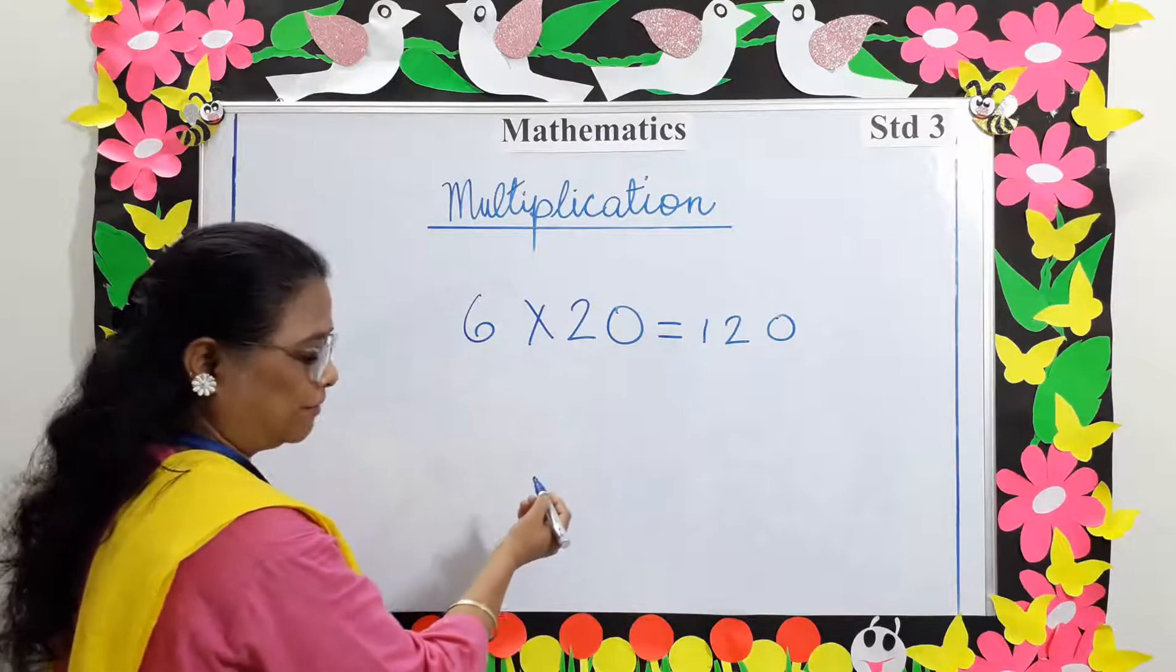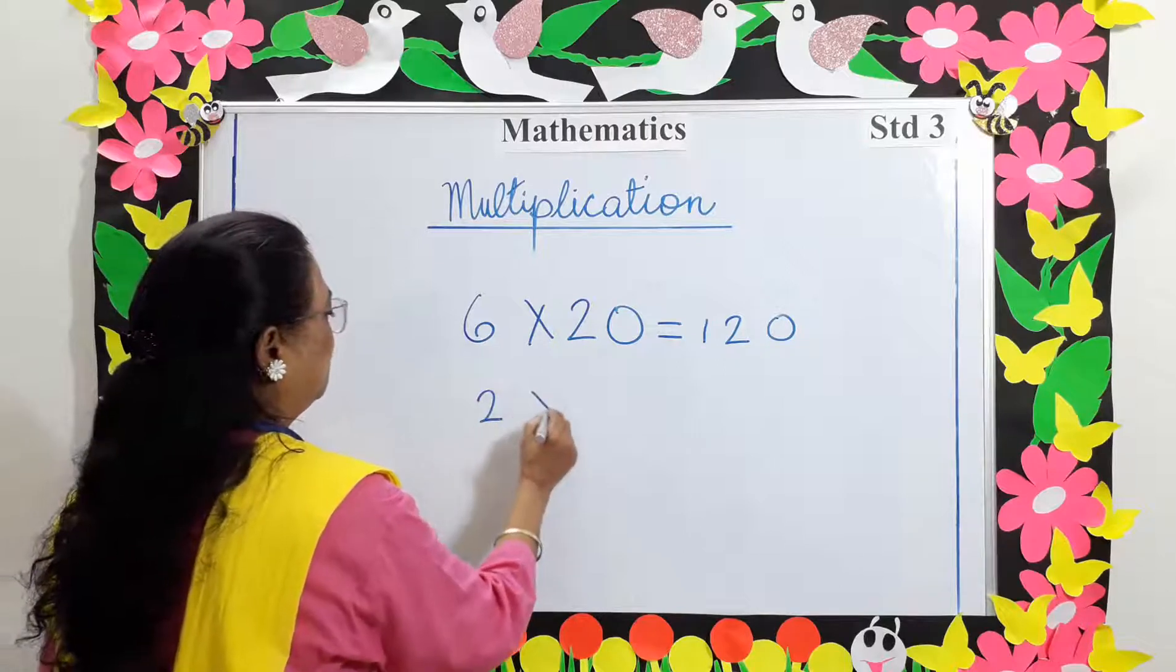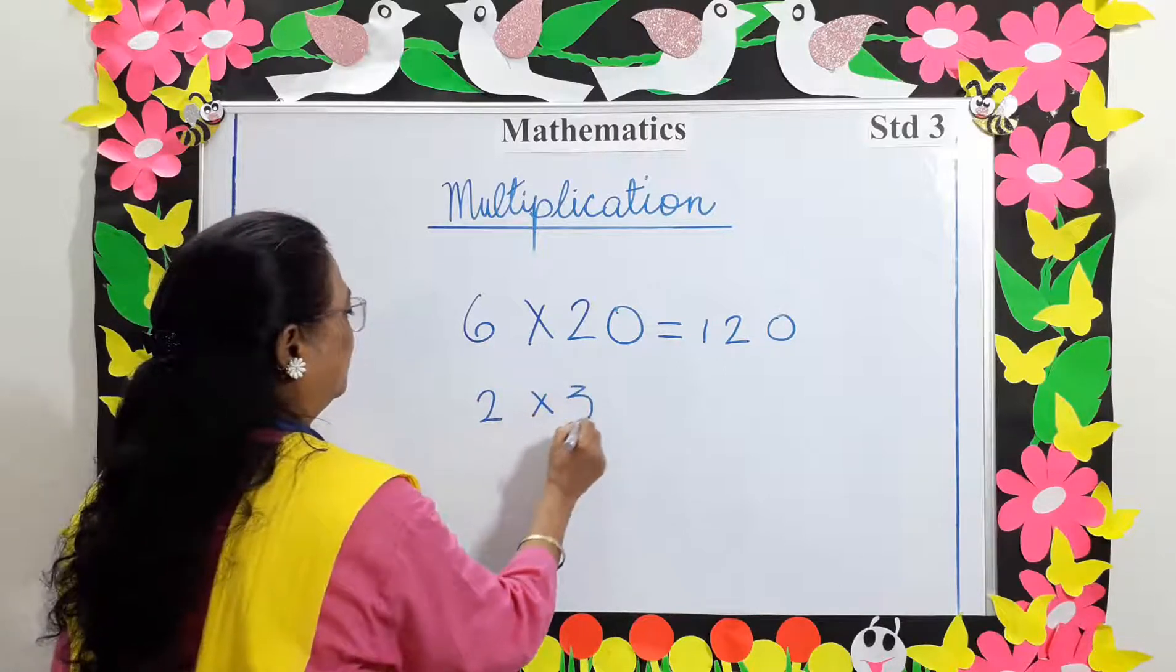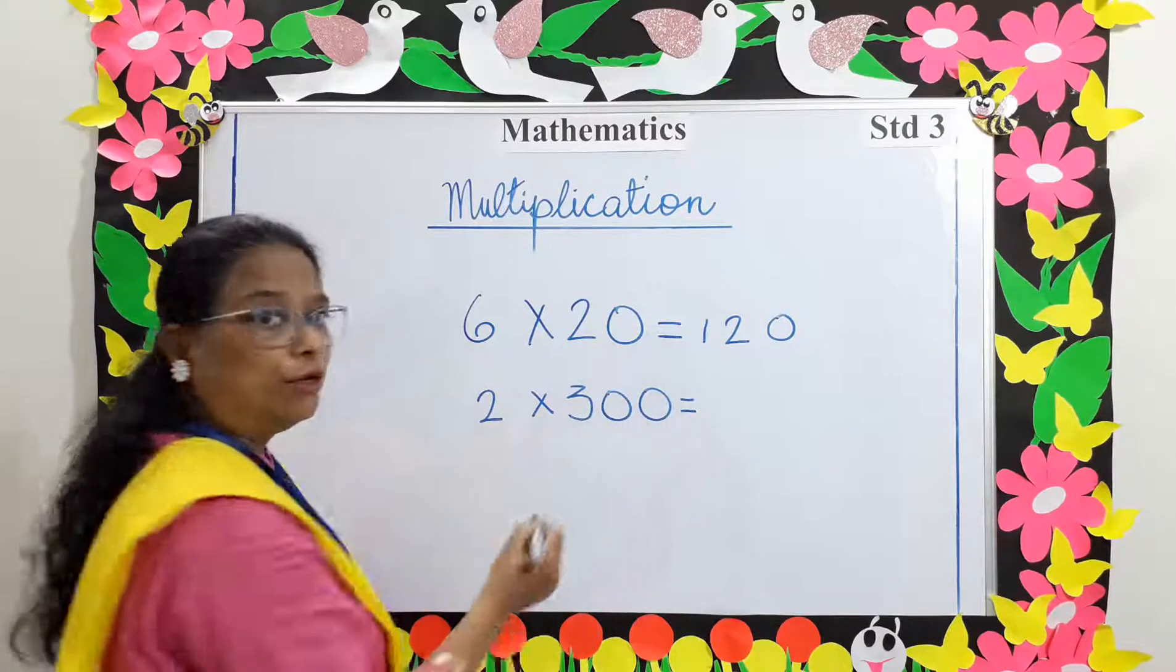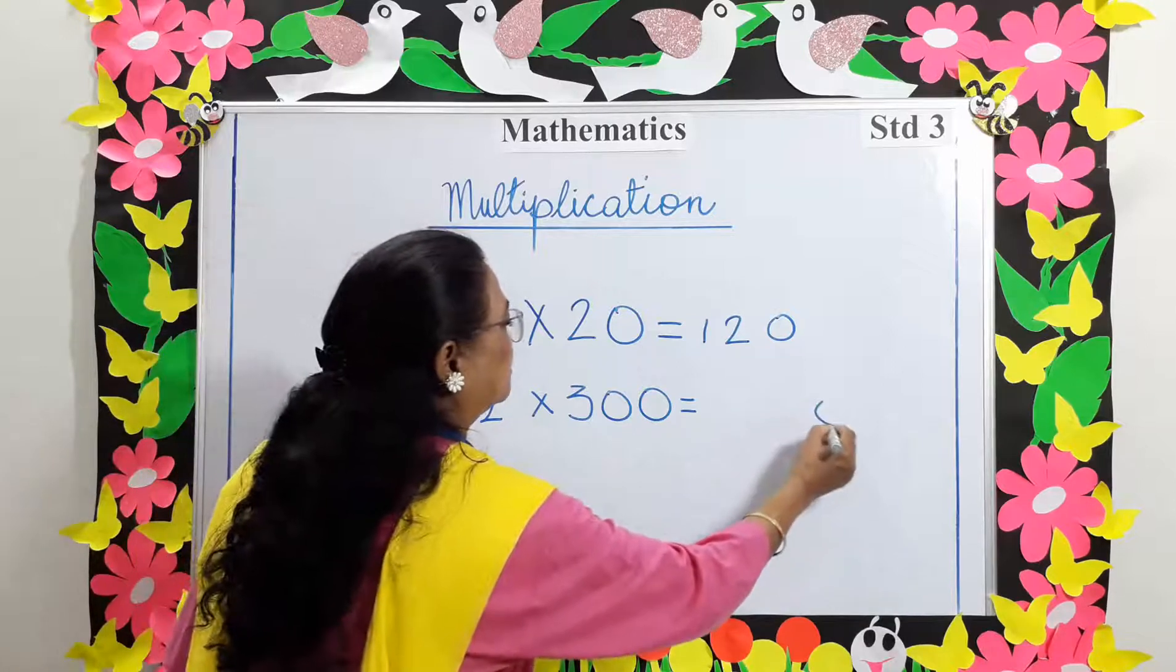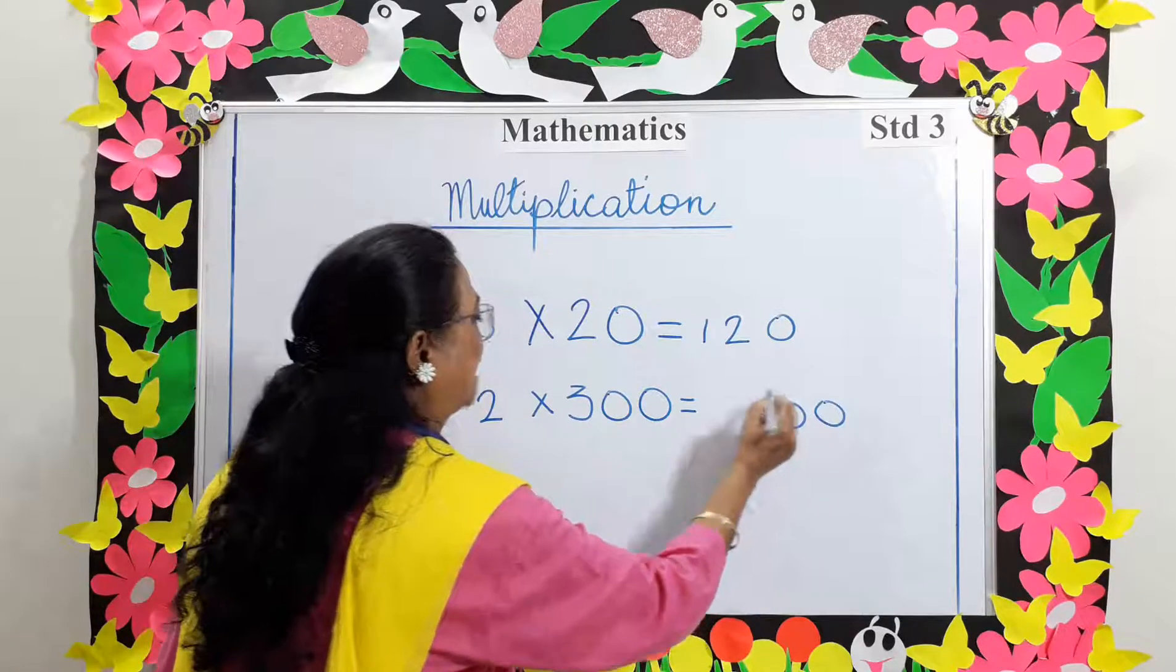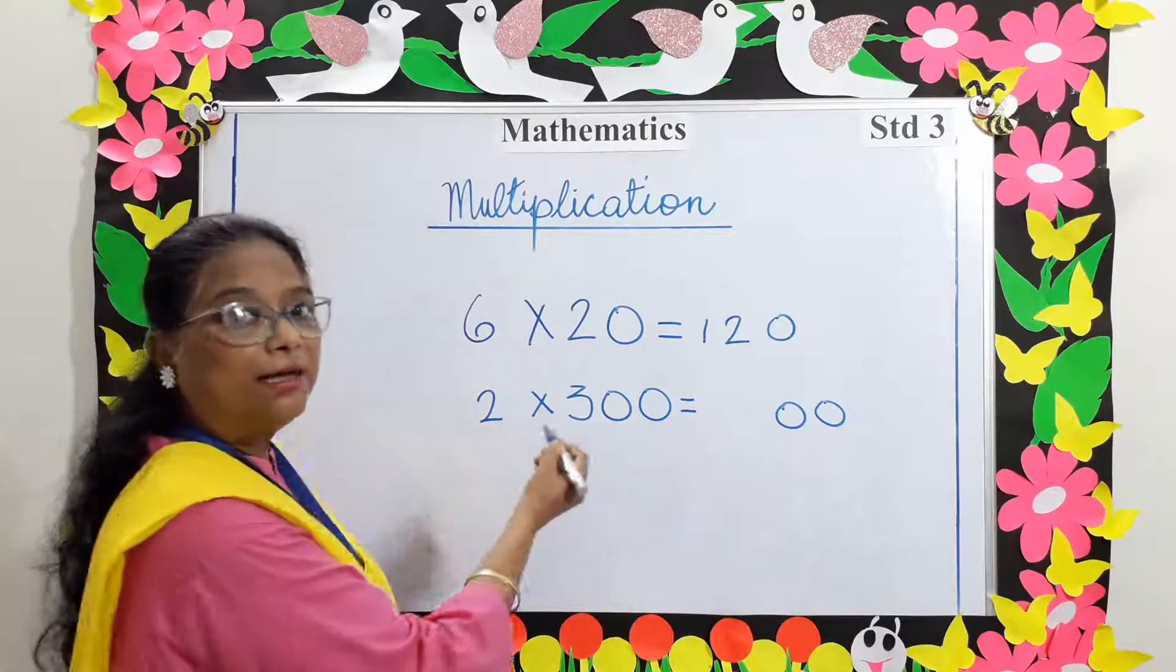Take another example: 2 multiplied by 300. Put the 2 zeros at the end and multiply 3 by 2. 3 twos are 6.